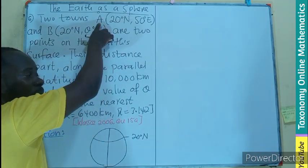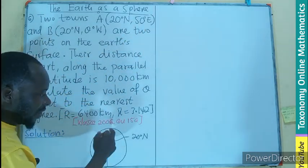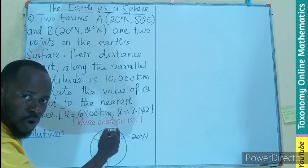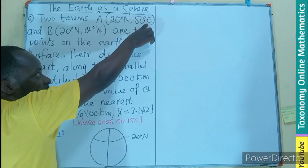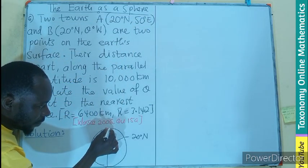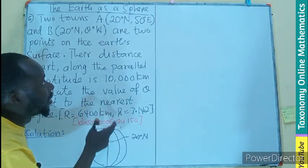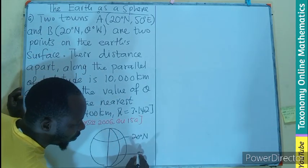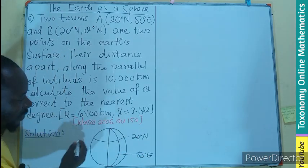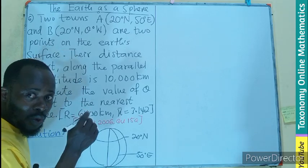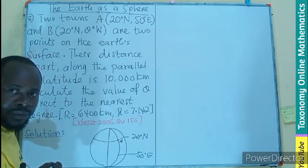Then we are on the longitude 50 degrees. We know that is the vertical line drawn either towards the west or the east. And this is on the east. So this is going to be my latitude of 50 degrees east. Then that is where we are going to locate the town A because the intersection of the latitude and the longitude give us the point A.